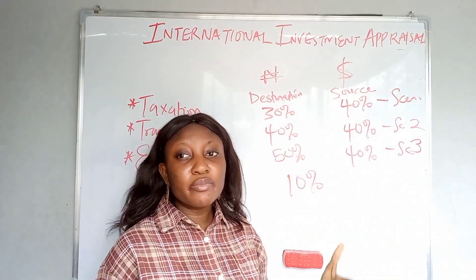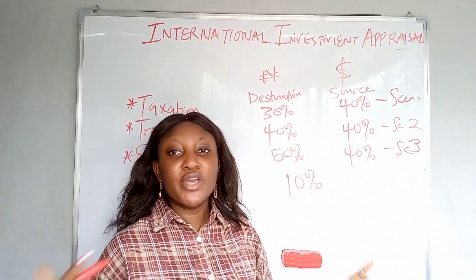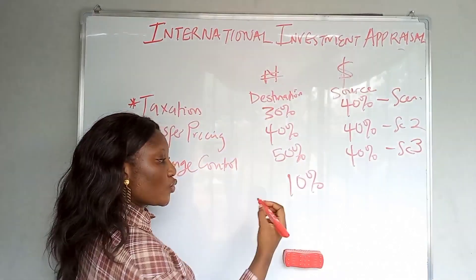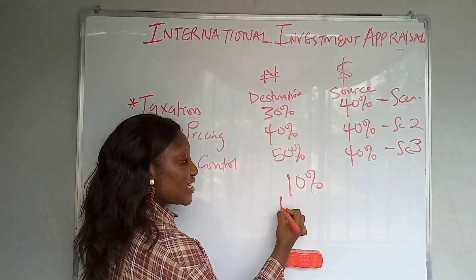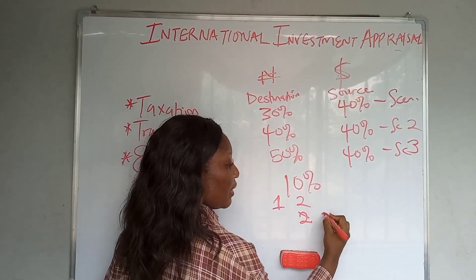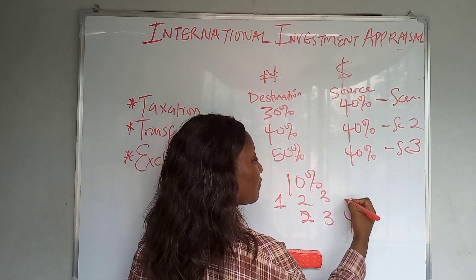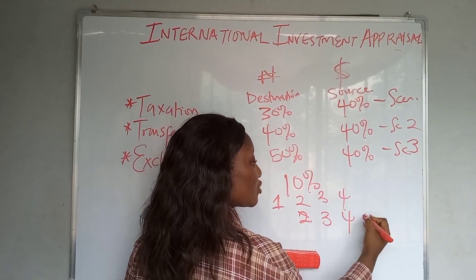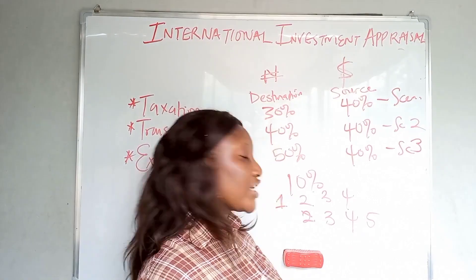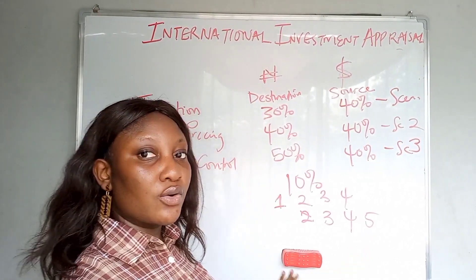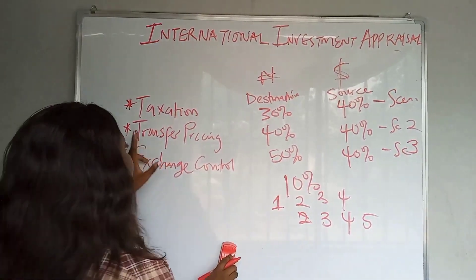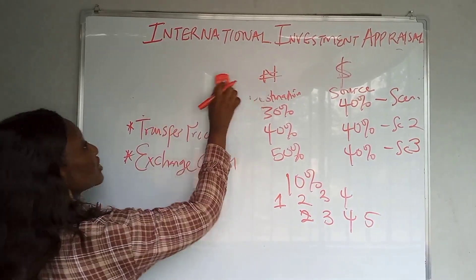Another issue on taxation is that sometimes taxation is one year in arrears — meaning year one tax is applied in year two, year two tax is applied in year three, year three tax is applied in year four, and so on. That's what it means for taxation to be in arrears.